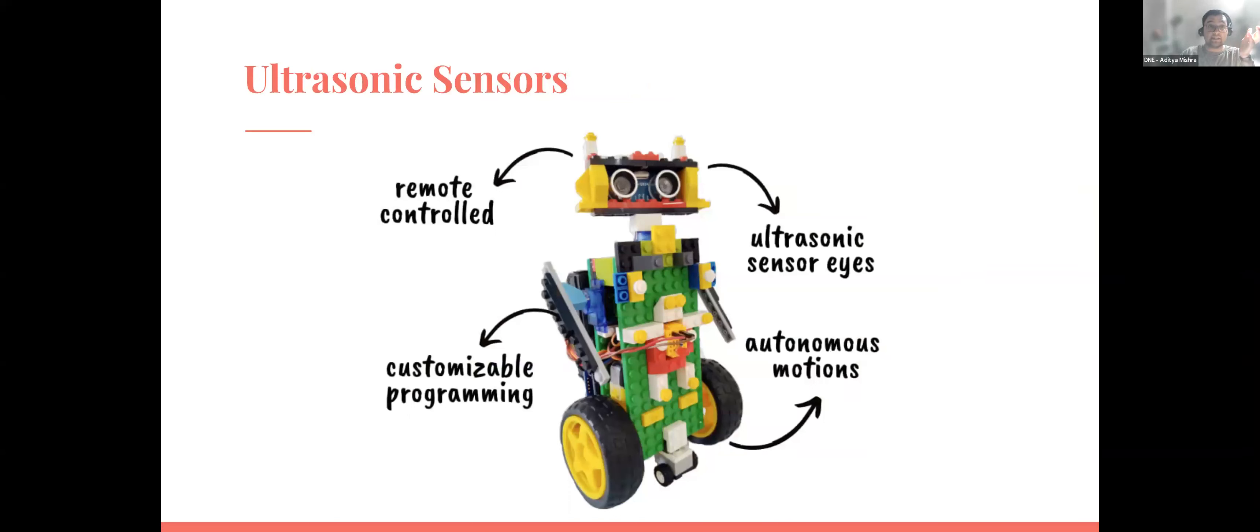Next, we have ultrasonic sensors. These are sensors that you might be very familiar with. Ultrasonic sensors emit sound waves and then measure the reflection of objects. They're very easy to use, just plug and play, and Arduino and lots of other microcontrollers support them. As a result, a lot of new engineers and students use or have used ultrasonic sensors for their projects. In this robot diagram, these eyes are actually ultrasonic sensors right here. It's pretty cool.